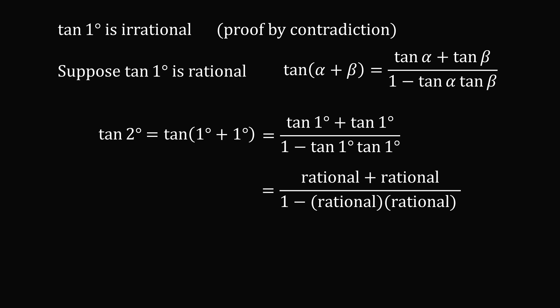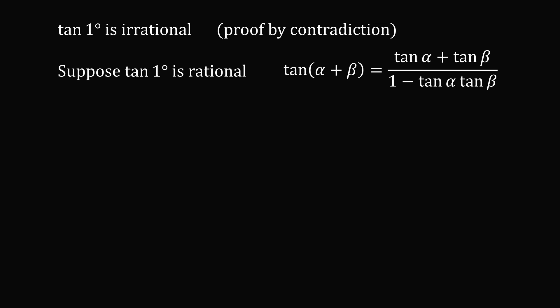So, this simplifies to be rational plus rational all over one minus rational times rational. Here, we have non-zero rational numbers. We know the denominator is not zero because tangent of two degrees is a well-defined number. We have the sum of rational numbers in the numerator, the product of rational numbers in the denominator, then the difference of rational numbers, and then the ratio of rational numbers where the denominator is not zero. It all ends up working out that this will be a rational number. So, if tangent of one degree is rational, then we know that tangent of two degrees is rational.